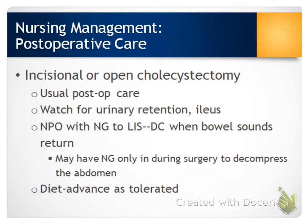In some cases, we may have an NG tube down to low intermittent suction to help decompress the abdomen and help prevent or resolve any small bowel ileus or obstruction. That will usually be removed once bowel sounds return. It might also be placed during surgery to help decompress the abdomen while removing the gallbladder. Early ambulation would be appropriate for both types of surgery, and diet should advance as tolerated.